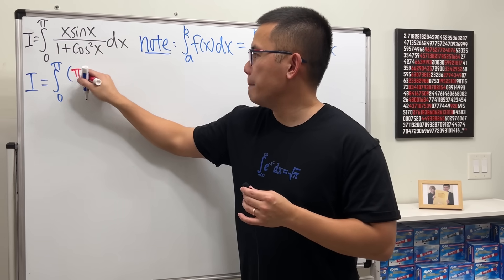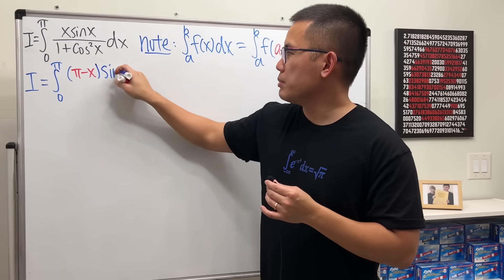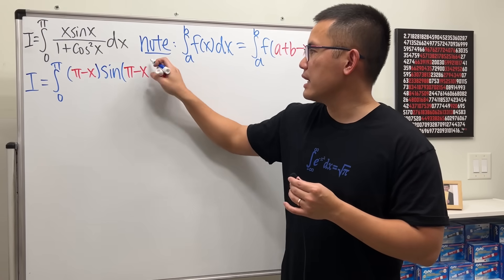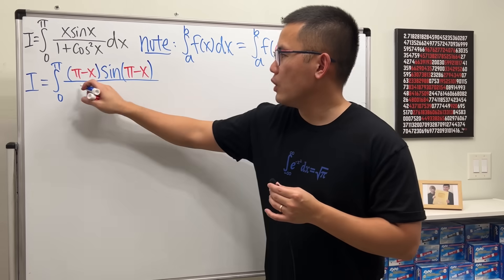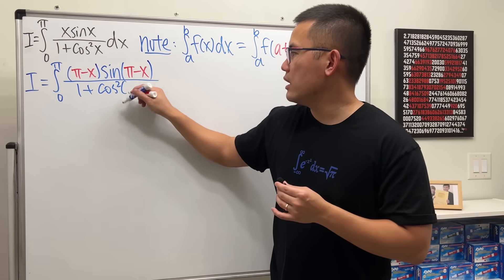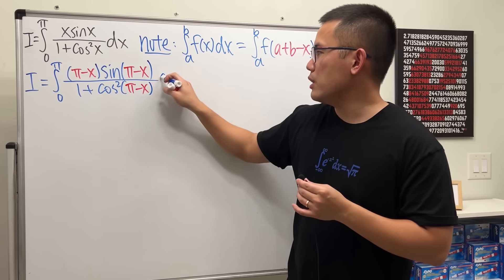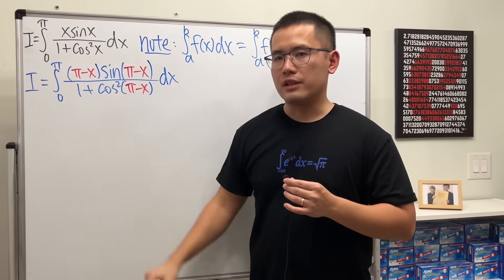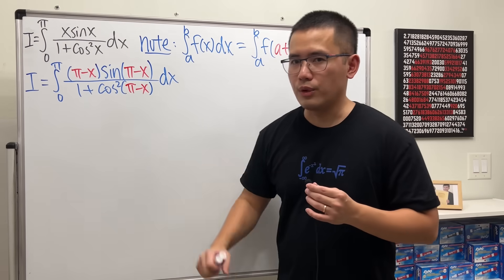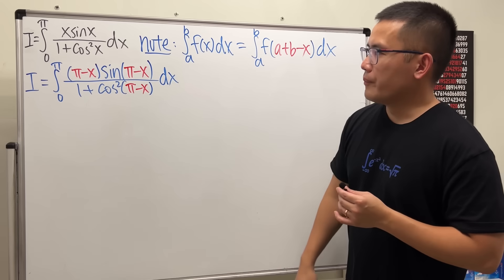So I'll write the integral with π − x multiplied by sin(π − x), over 1 + cos²(π − x). By the symmetry property, this is still equal to I — even though they don't look the same, they are the same.